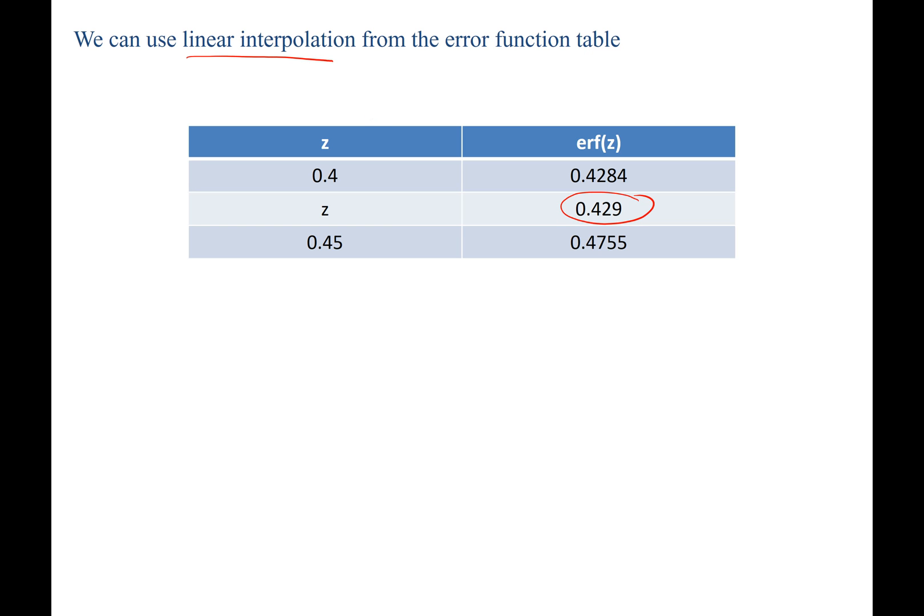The equation for which is written as follows: z minus the value above, 0.4, over the quantity of the value below, 0.45, minus the value above, 0.4. This will be equal to our error function of z value, 0.429, minus the value above, 0.4284, over the value below, 0.4755, minus 0.4284.